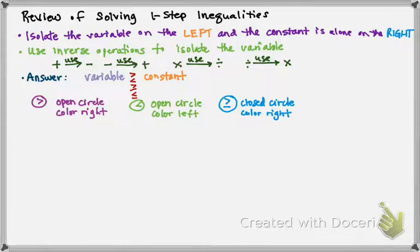And then if we have less than or equal to, we're going to have a closed circle, and we're going to color left.